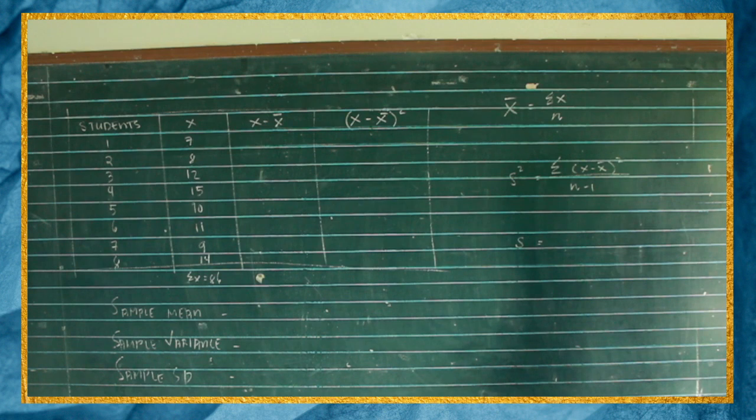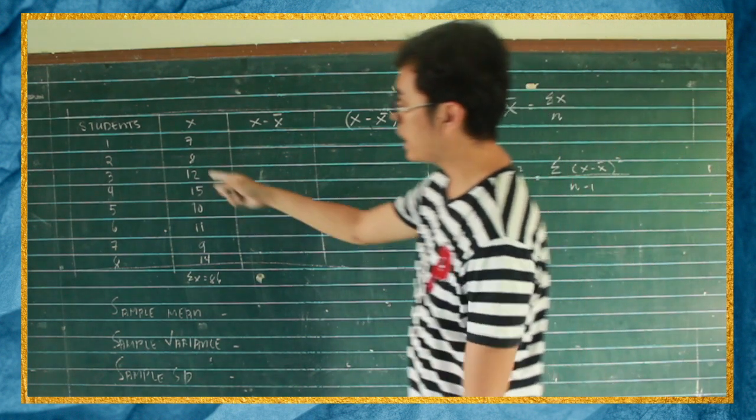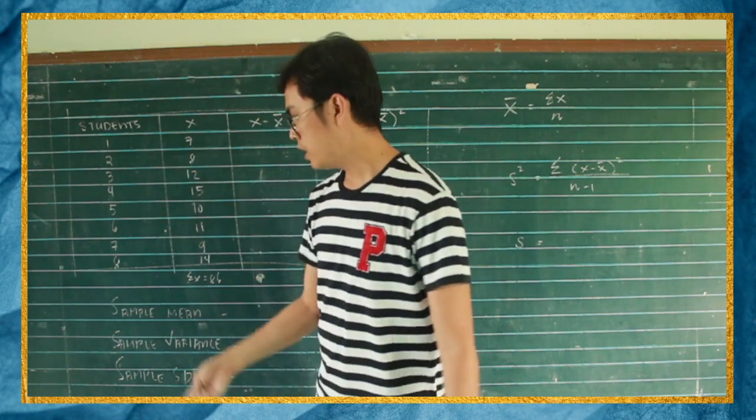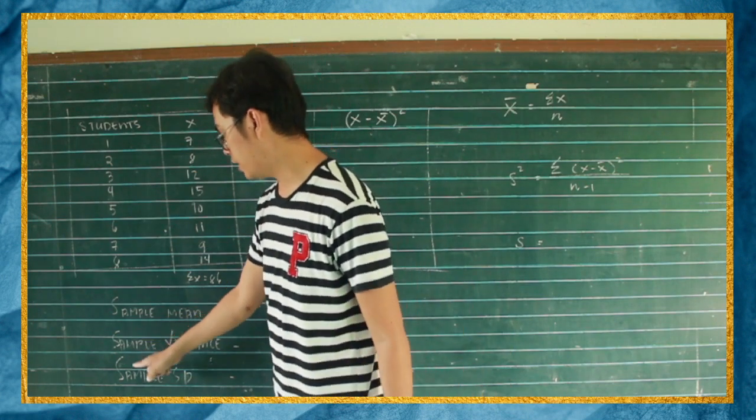So example, we have the criteria on the board. They are the scores of 8 randomly selected students. So isasabihin, we have to use the word sample kasi randomly selected. So kumuha lang tayo ng sample dun sa mga students. So they are the grade-end students.